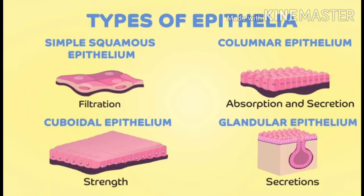Next comes cuboidal epithelium. It is strong and helps in the kidney tubules — it especially forms the lining of kidney tubes and ducts of the salivary glands. It provides mechanical support. Epithelial cells can also acquire additional specialization as gland cells, which can secrete substances at the epithelial surfaces. Sometimes a portion of epithelial tissue folds inward and a multicellular gland is formed.